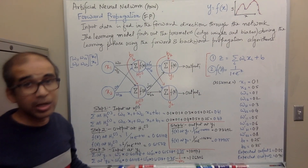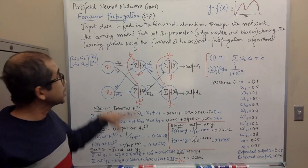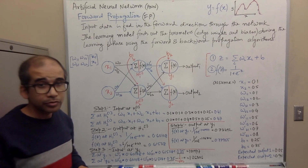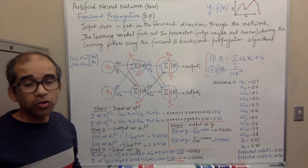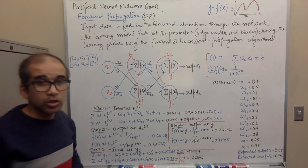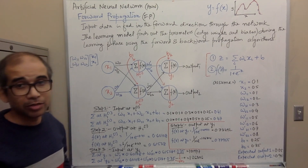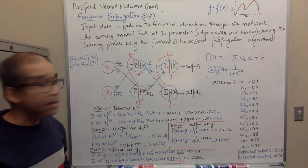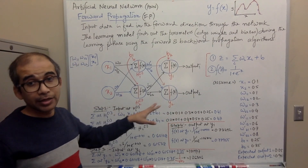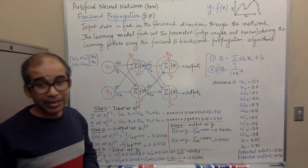The learning model finds the parameters — the weights and biases — during the learning phase using two algorithms: forward propagation and backward propagation. In this example we'll show how forward propagation works, then explain backward propagation. I've used an example I found on the internet and I'll share the links so you can follow from there.